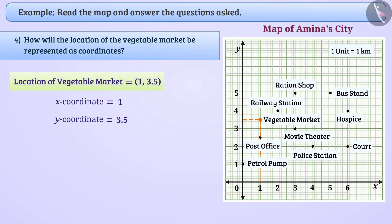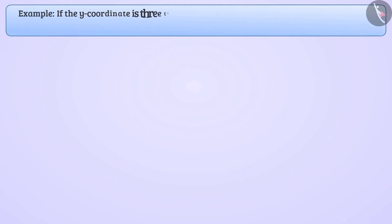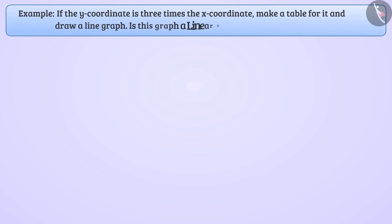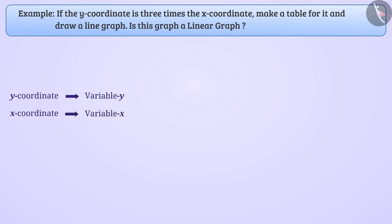Next example: if the y-coordinate is 3 times the x-coordinate, make a table for it and draw a line graph. Is the line graph a linear graph? Let's represent y-coordinates with variable y and x-coordinates with variable x. We are told that the y-coordinate is 3 times the x-coordinate, so we can say that y is equal to 3x.